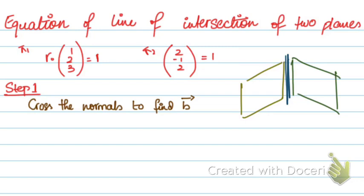Do you agree that this line is basically perpendicular to the normals of both planes? We know that when we cross two vectors, we get a new vector that's perpendicular to both. So our first step will be crossing the two normals to find the direction vector of the line.